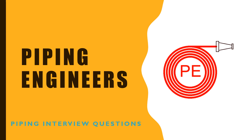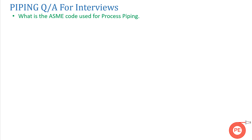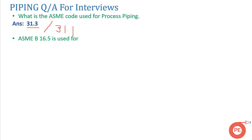The first question is: what is the ASME code used for process piping? The ASME code used for process piping is ASME B31.3 — all process piping is done as per ASME B31.3. If someone asks what is the code for power piping, the code for power piping is ASME B31.1 — all power piping is done as per ASME B31.1.